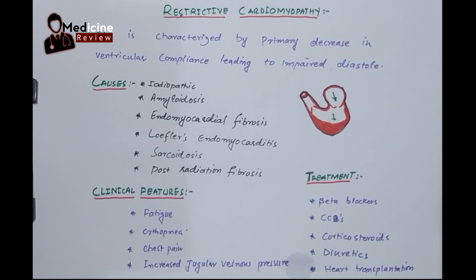For diagnosis, restrictive cardiomyopathy is usually diagnosed through echocardiogram, and we can also go for a chest X-ray. On echocardiogram, there will be evidence of diastolic dysfunction.